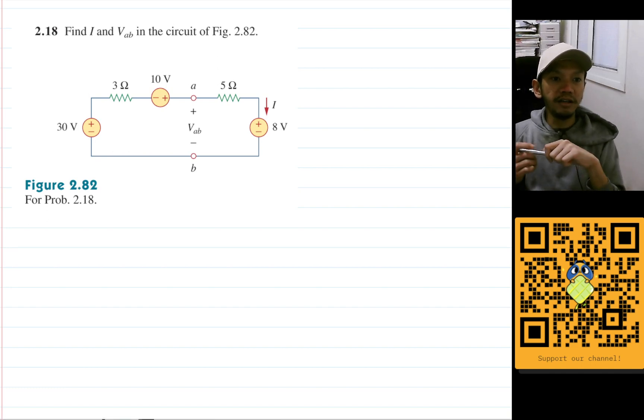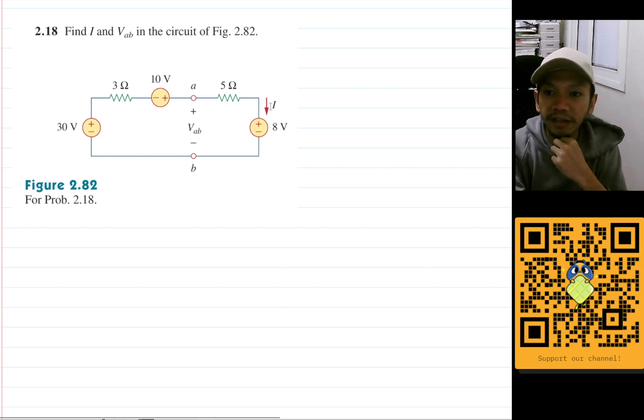Hello, my name is RD and we are going to solve problem 2.18 from the textbook. The question is to find I, which is the current here, and Vab, which is the voltage between node A and B of the circuit.